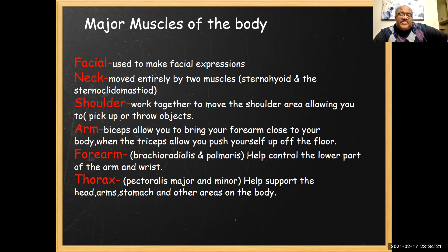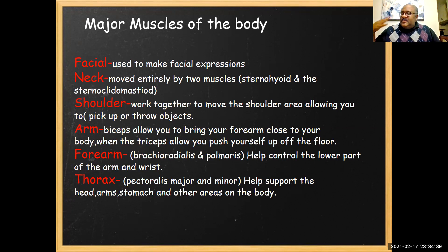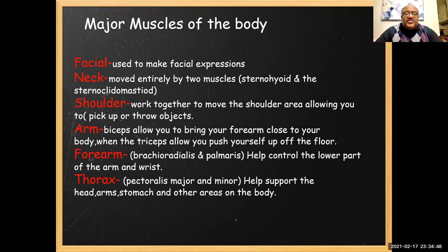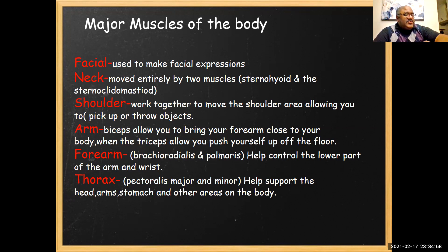Your arm and biceps allow you to bring your forearm close to your body. There are peculiar things about arm muscles — for example, you cannot put your palm flat on your shoulder. Your muscles allow you to do a lot with your forearm. The brachioradialis and palmaris control the lower part of the arm and the wrist. Remember, you have two bones there — the ulna and the radius — and the muscles in there control both bones and the wrist.